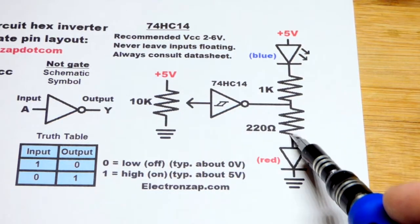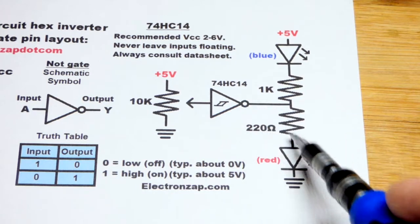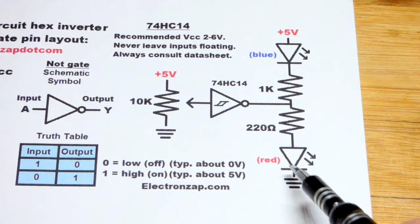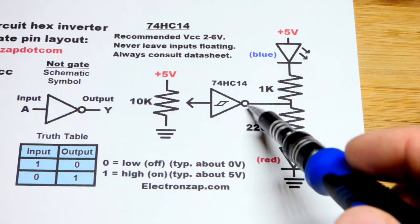When the output is high, close to five volts as it can get, the current will go through that resistor and the red LED. Red for high output, blue for low output.